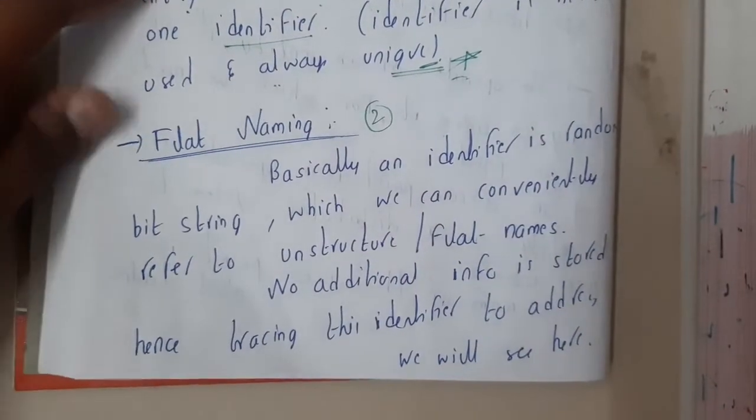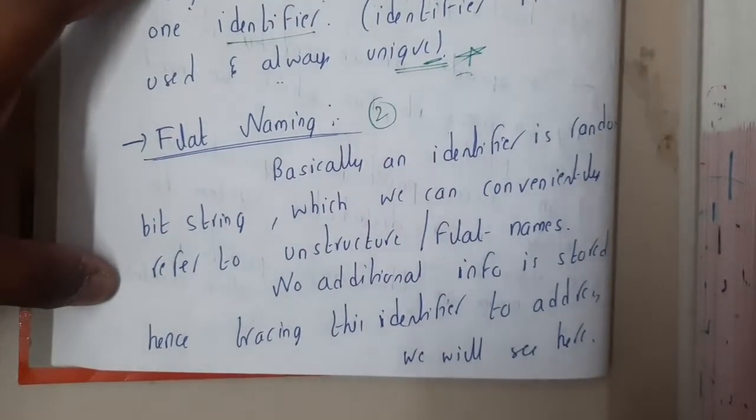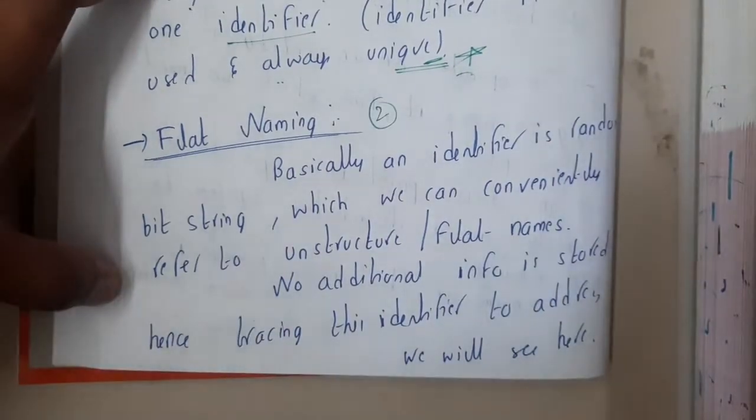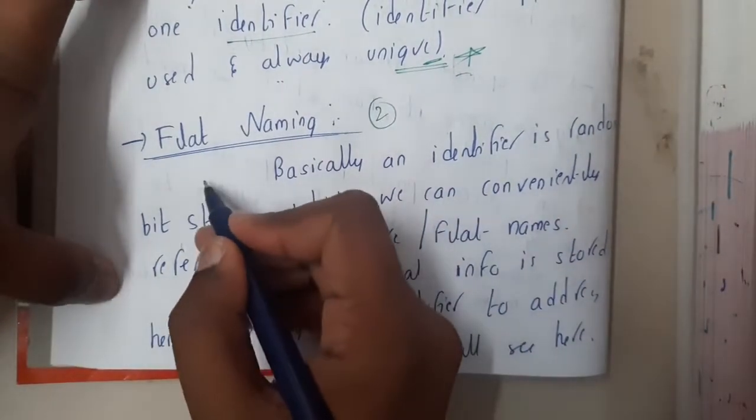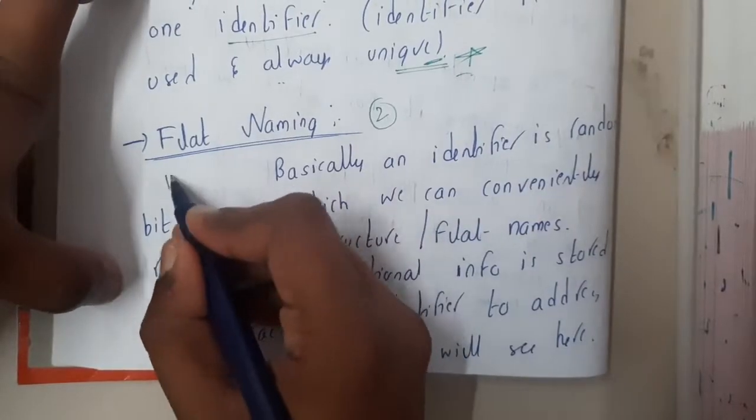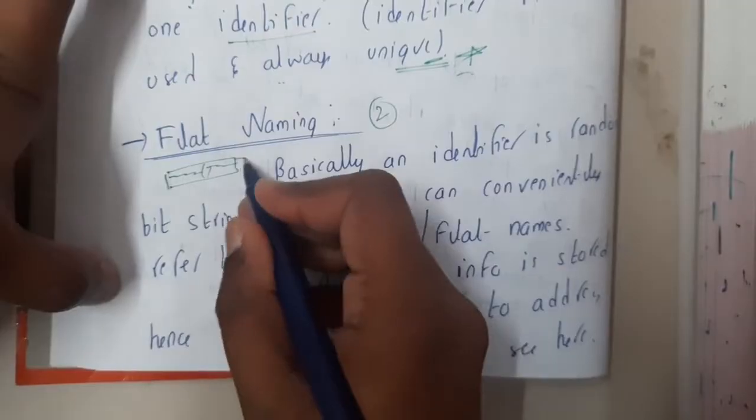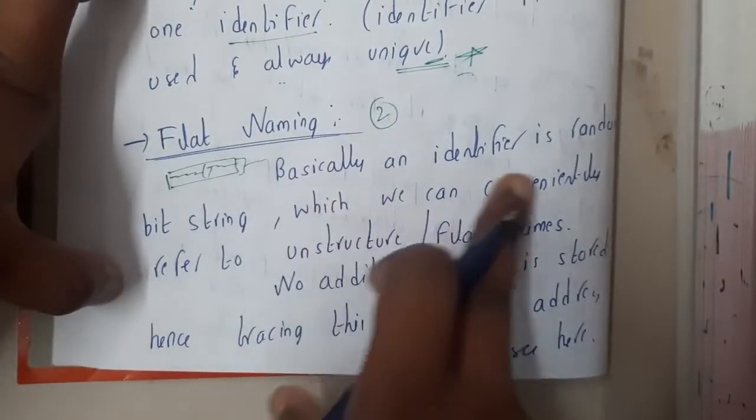Hello, we are back with our next lecture. In this lecture, let's go through flat naming. Basically, flat naming is an unstructured naming format in which you will be storing the names one after the other with some kind of symbol in between them.